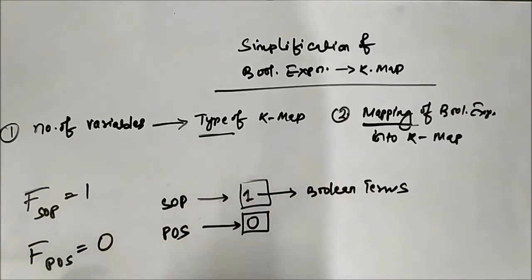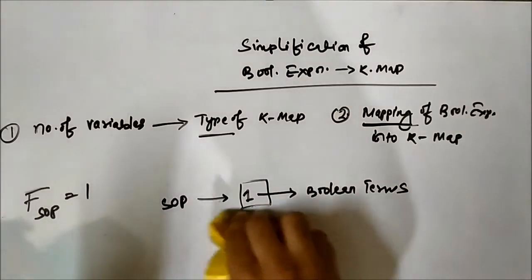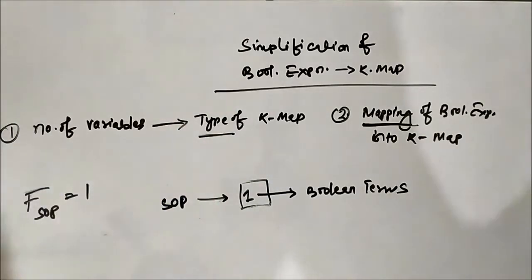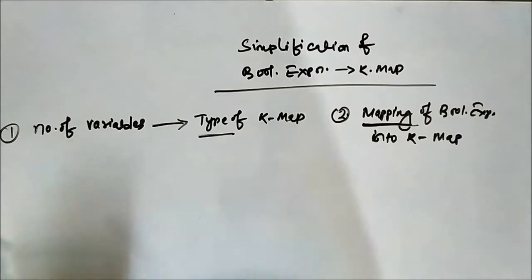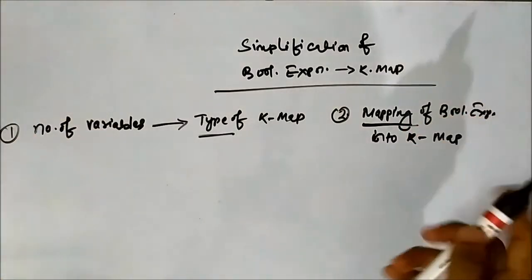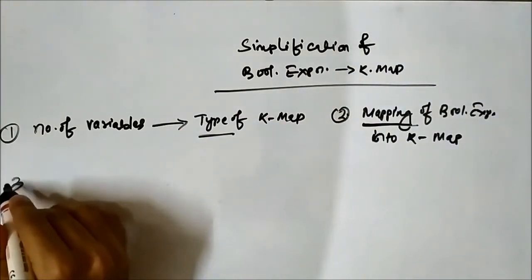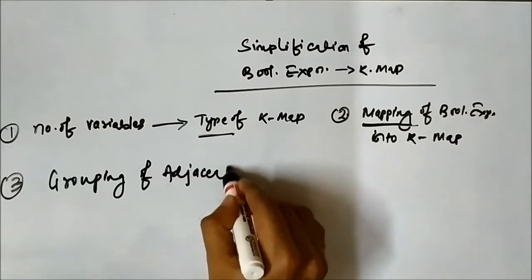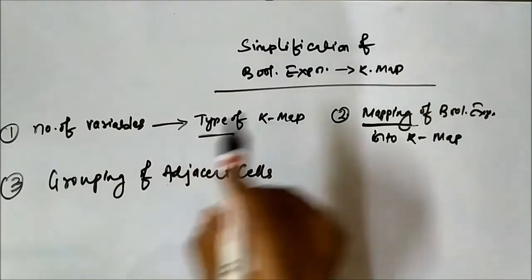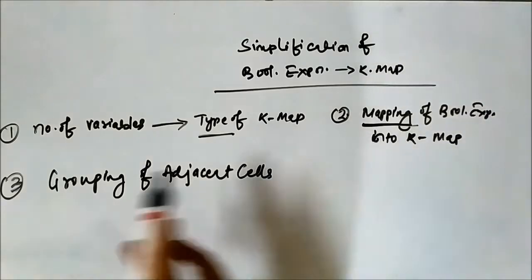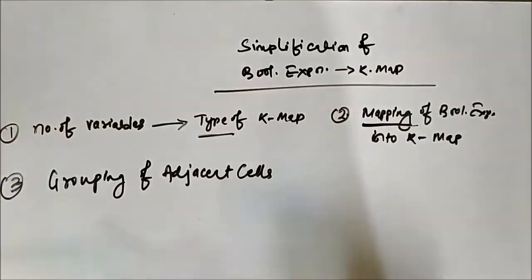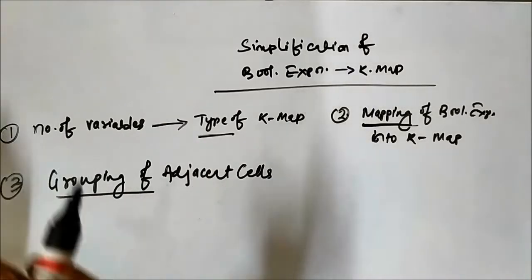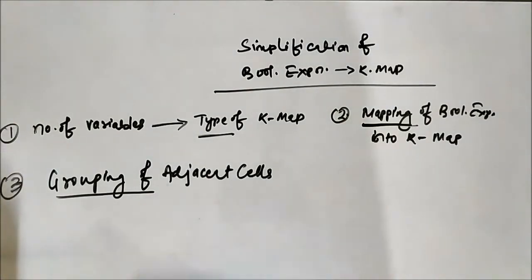We are currently discussing SOP, so you will assign value 1. That is what mapping is. The third step, after assigning binary value 1 to the cells corresponding to the boolean terms present, is grouping of adjacent cells. There are some rules related to group formation which we will discuss in a separate video.